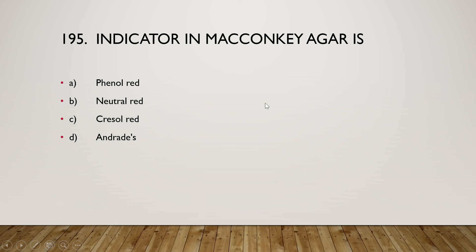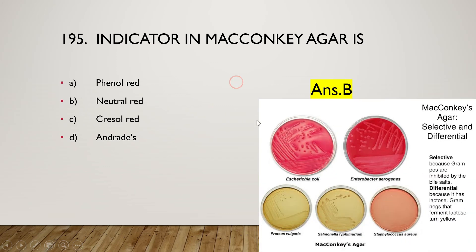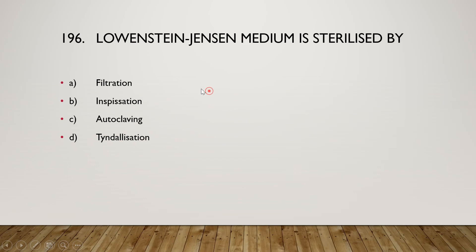Next question: the indicator in MacConkey's agar is phenol red, neutral red, cresol red, or Andrade's indicator? The right answer is option B, neutral red. MacConkey agar is a selective and differential medium. It is selective because gram-positive bacteria are inhibited by bile salts and only gram-negatives can grow. It is differential because it contains lactose, and gram-negative bacteria that ferment lactose turn yellow, allowing us to differentiate gram-negative organisms by color.